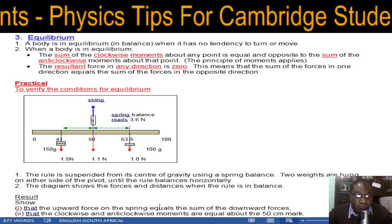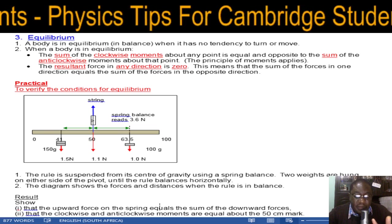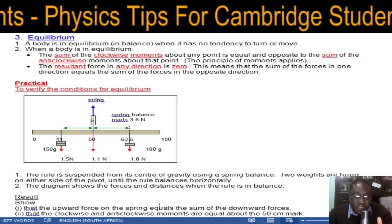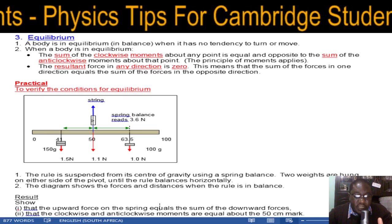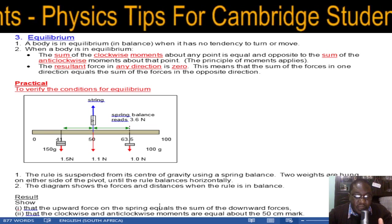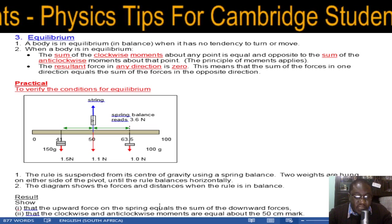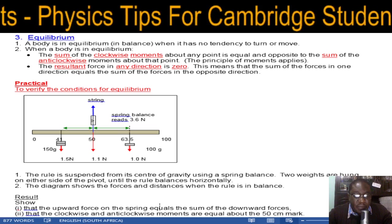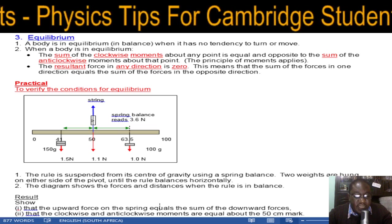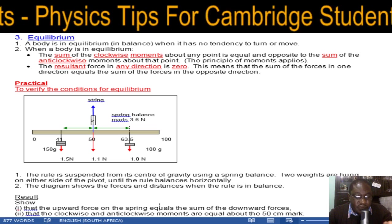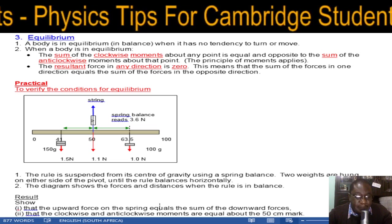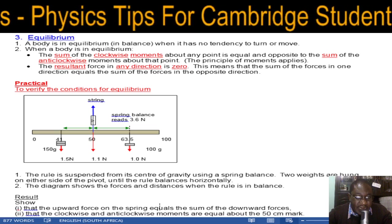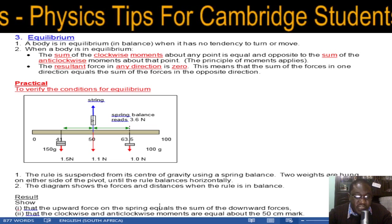There are two conditions for equilibrium. First, the sum of the clockwise moments should equal the sum of the anticlockwise moments about any point. When you take the clockwise moments about a point and take anticlockwise moments about the same point, you should get the same value for equilibrium. Second condition: the resultant force in any direction is zero, which means the sum of forces in one direction should balance or equal the sum of forces in the opposite direction.